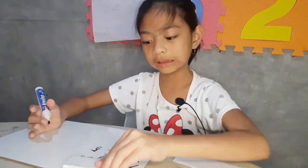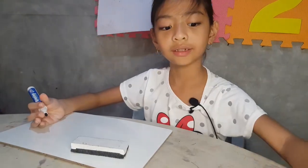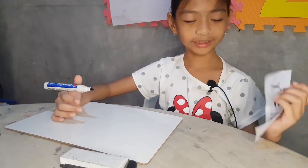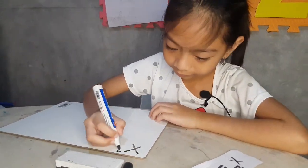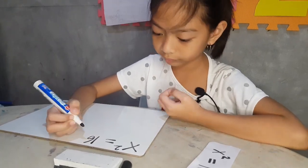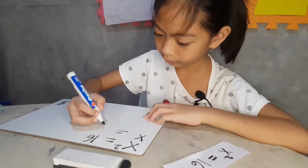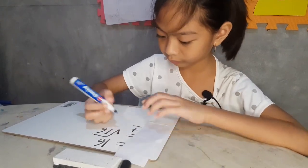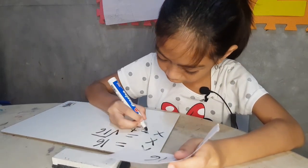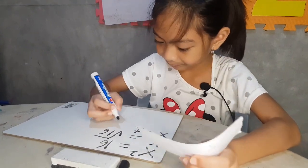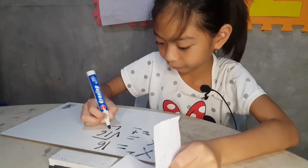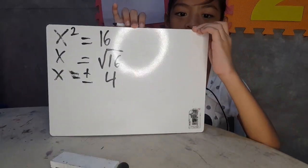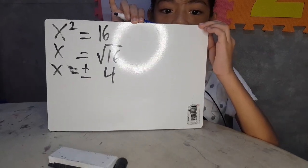Question number two. This is the question. Good job — nice. So you have X squared equals 16, so your X is equal to the square root of 16. X is equal to positive or negative 4.